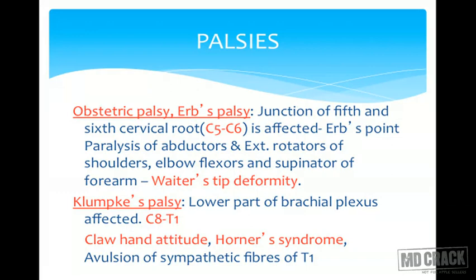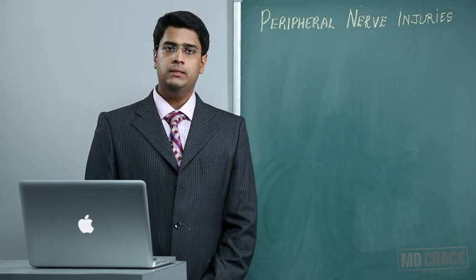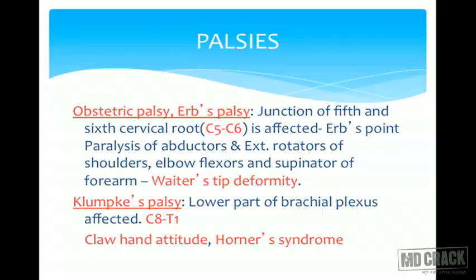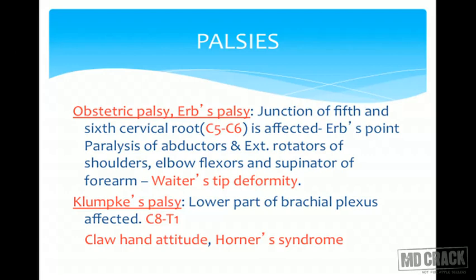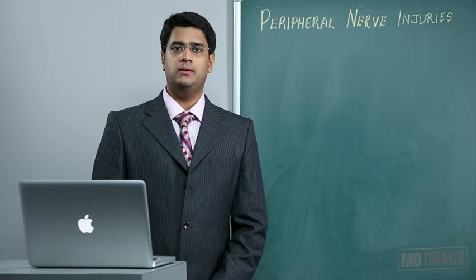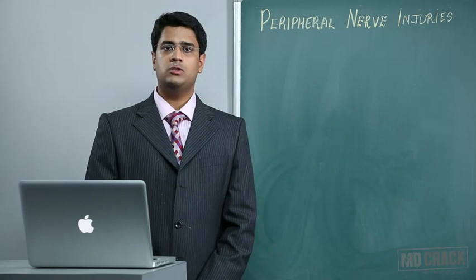Klumpke's paralysis affects the lower part of the brachial plexus — C8 and T1 root. You must know that Erb's palsy is C5-C6 while Klumpke's is C8 and T1. There is a classical claw hand deformity seen in Klumpke's, and Horner's syndrome is also associated. Horner's syndrome is characterized by ptosis (drooping of the eyelid), miosis (constriction of the pupils), anhydrosis (lack of sweat), enophthalmos (eyeball sucked into the socket), and loss of the ciliospinal reflex.